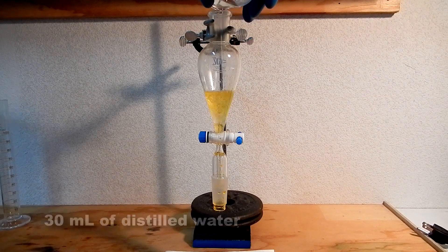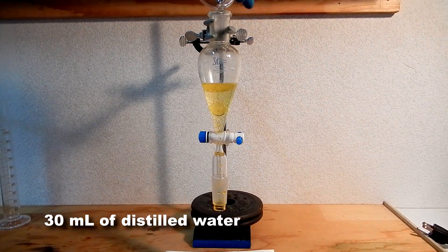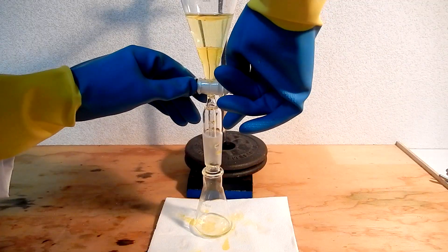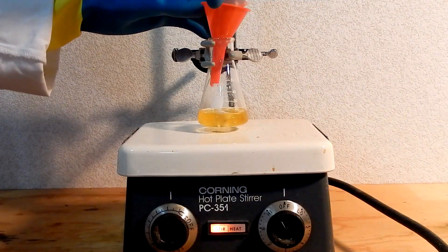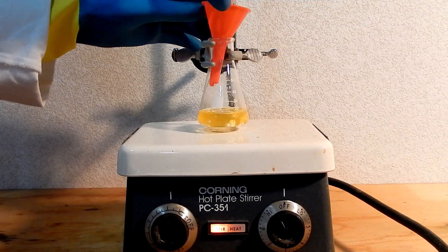Wash the chlorobenzene one more time with 30 milliliters of distilled water. Transfer the chlorobenzene to a 50 milliliter Erlenmeyer flask and add enough anhydrous calcium chloride until the desiccant is free-flowing without clumps.